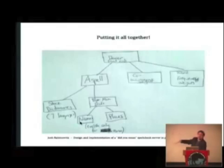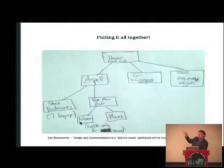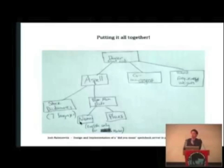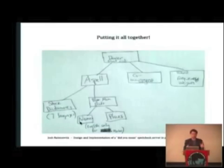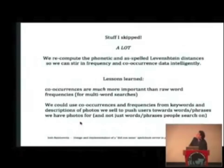Putting it all together: we take each word the user typed, pass it into ASPEL with our custom dictionaries, and get back a ranked list of the top 10 or 20 words that ASPEL suggests. We then rearrange those based on how frequent each word is and the co-occurrences of those words appearing together. We can only use co-occurrences if there are multiple words in the search.